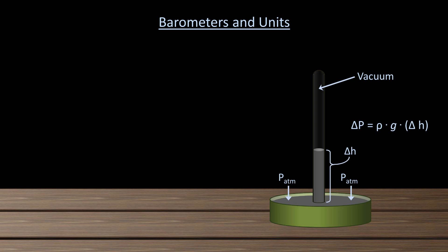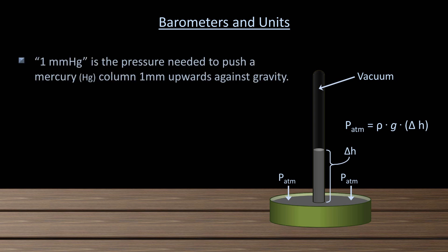Because of the vacuum, this pressure gradient is just atmospheric pressure. As a unit of pressure, 1 mm of mercury is the pressure needed to push a mercury column up 1 mm against gravity.